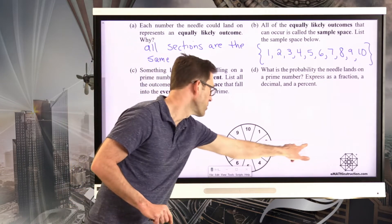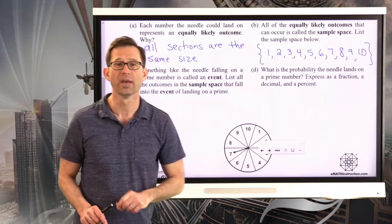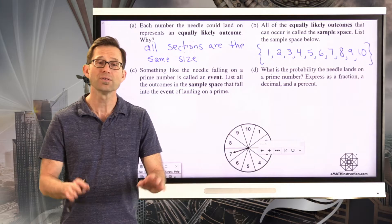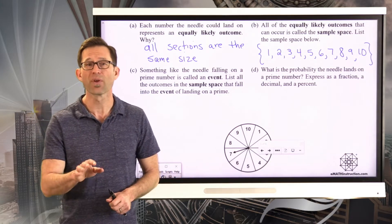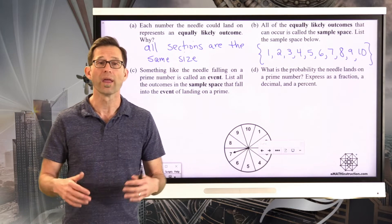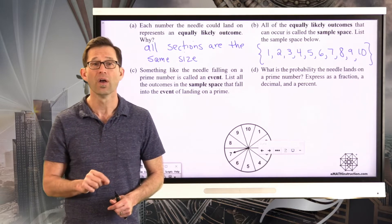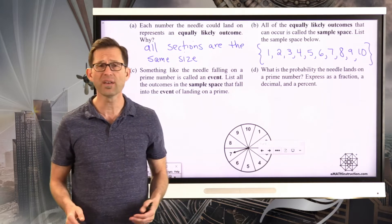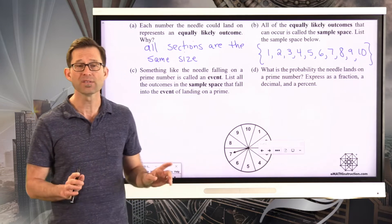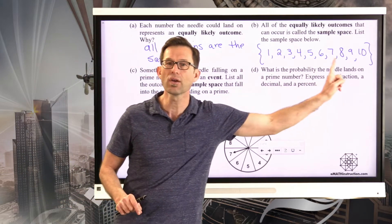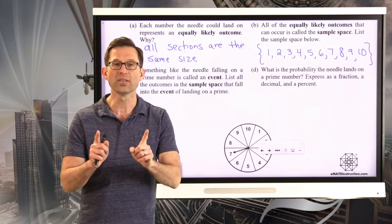Something like the needle falling on a prime number is called an event. An event is something we find the probability of — for example, it rains tomorrow, or the spinner lands on a number less than 5. In this case, our event is the spinner landing on a prime number, and we want to list every outcome in the sample space that falls into that event.